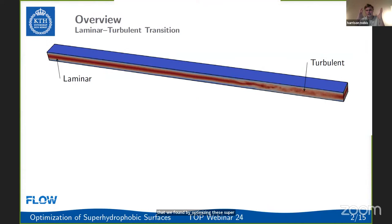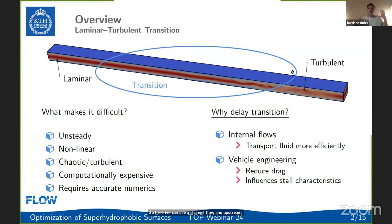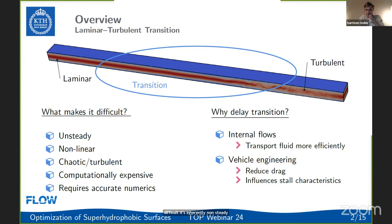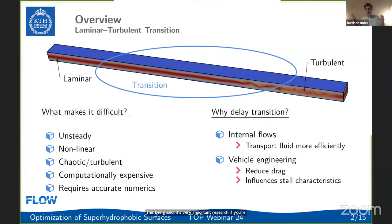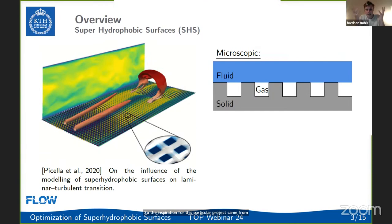In a channel flow, upstream we have a laminar regime and downstream we are turbulent. Our research group is particularly interested in the transitional process between these two states and in ways to control this transition. Studying laminar-turbulent transition is notoriously difficult — it's inherently non-steady, the Navier-Stokes equations are nonlinear, turbulence is chaotic, and we're looking at the growth of very small perturbations requiring very accurate numerical methods.